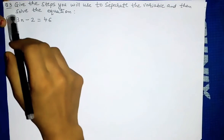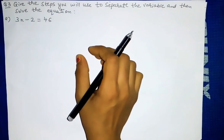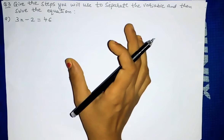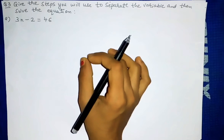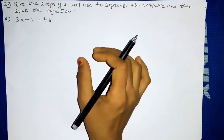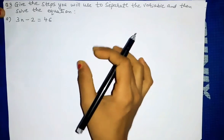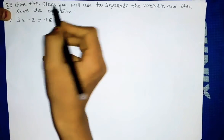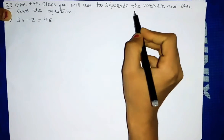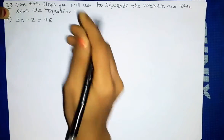Hello students, now we will see question number 3 of exercise 4.2, 7th standard simple equations. We have already seen previous two questions, question 1 and question 2. In those questions there was only one step — we were doing only one step and getting the value of the variable. Now here more than two steps we will have to do. The question is: give the steps you will use to separate the variable and then solve the equation.